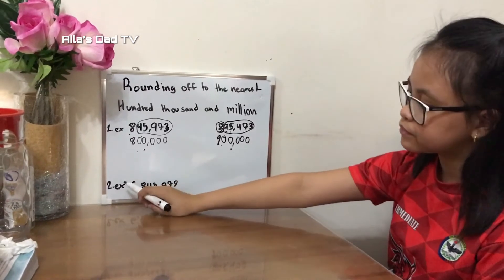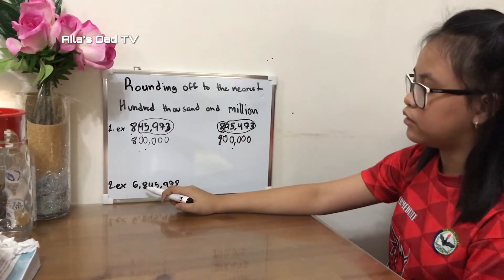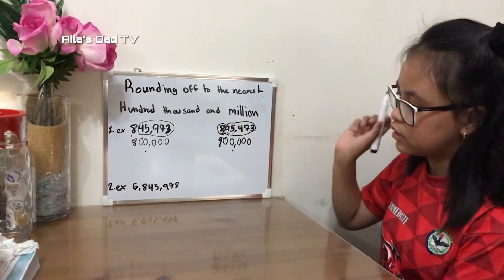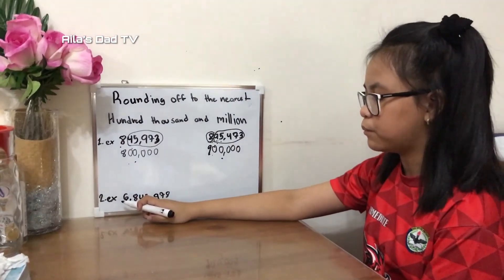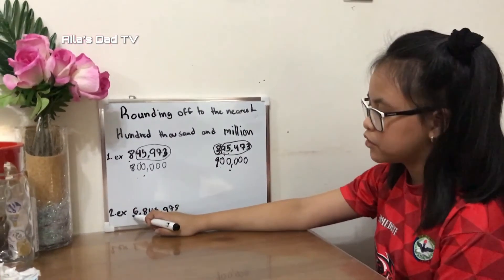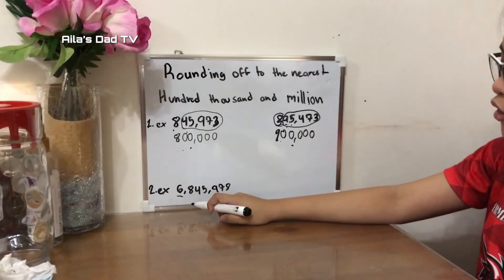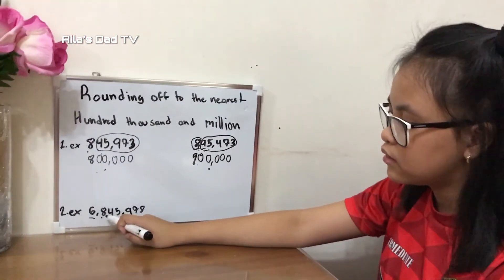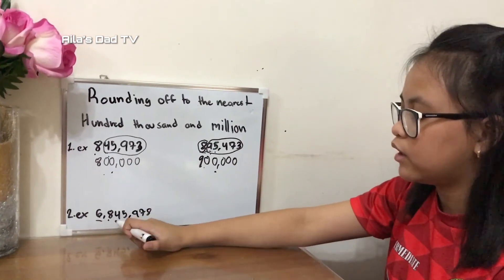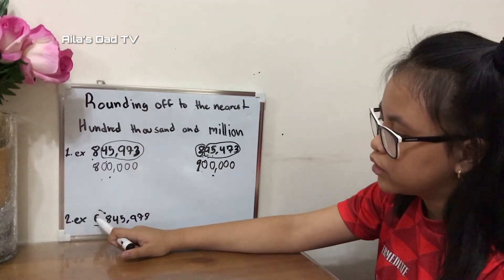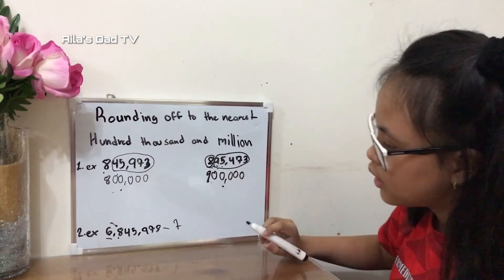Here is another example. We will be rounding this number to the nearest million. The first step is to identify which number is in the millions place, which is six. The next thing is to look at the digit to the right, which is eight. Since eight is greater than five, we will add one to six, which makes seven.